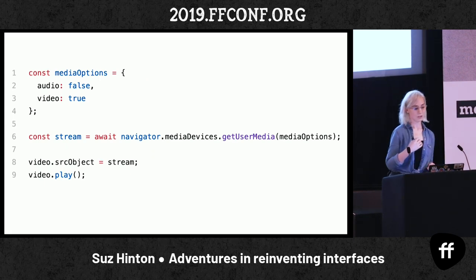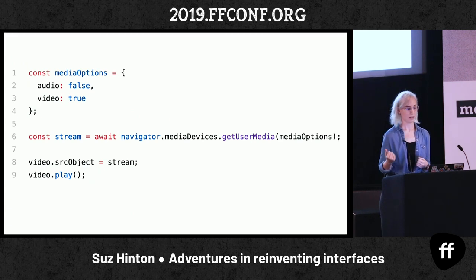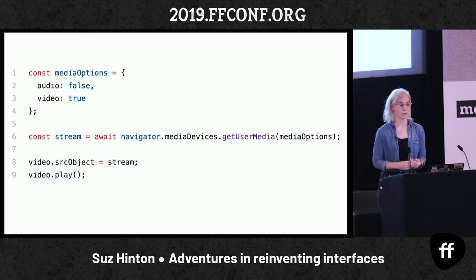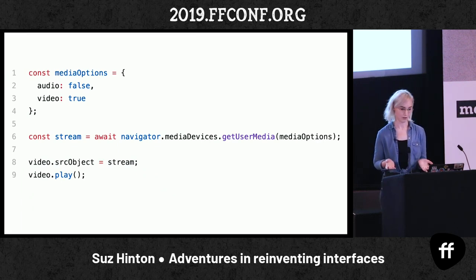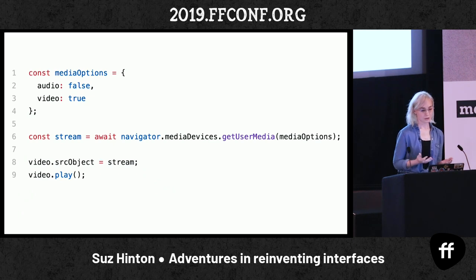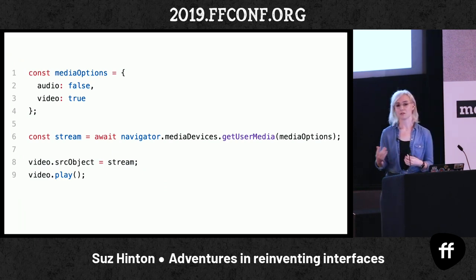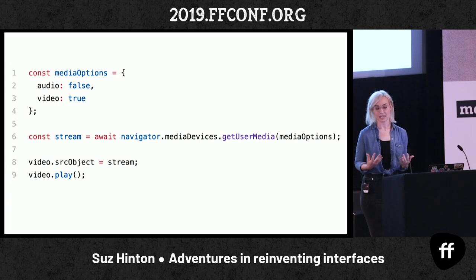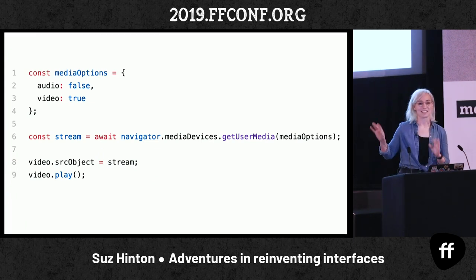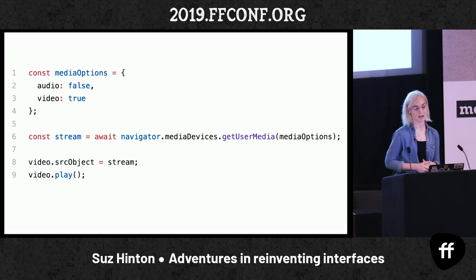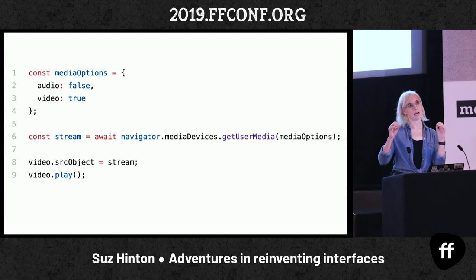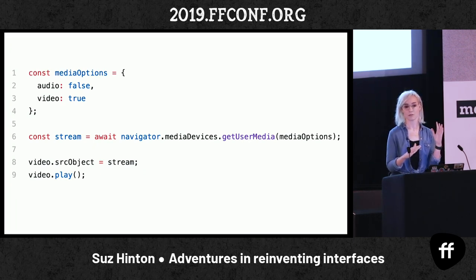So let's look at what the media stuff looks like. If you've ever done getUserMedia before, this is a very standard API request. Generally what we do is specify our options — do we want audio and video, or one or the other? In this case we just want video. We create a stream by calling navigator.mediaDevices.getUserMedia(). That always pops up a permission prompt, but if they give us permission, we can put a video element on our webpage and pipe the stream to it as the source, which is pretty cool. A lot of this stuff is just like Lego pieces we can put together.